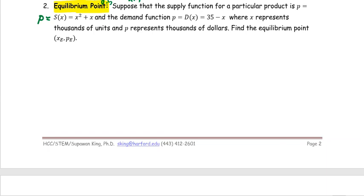Find the equilibrium point—the point where demand equals supply. We know that S(x) = D(x), or supply equals demand, and the point means an ordered pair.